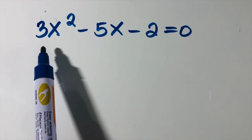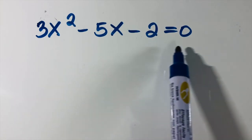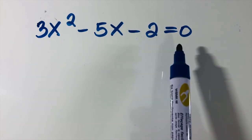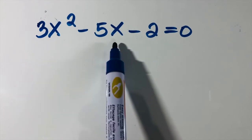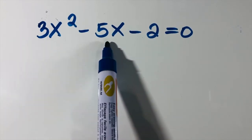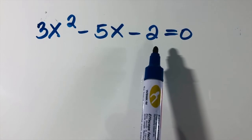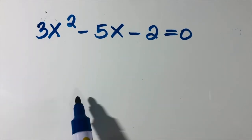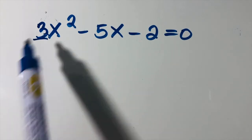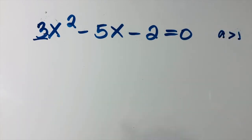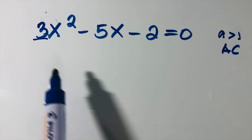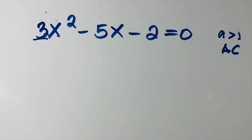Let us try 3x squared minus 5x minus 2 equals zero. Is this in standard form? Yes. Is there a common factor among all terms — 3, 5, 2? No, and x is only in the first two terms. Look at a: a is greater than one, so we cannot use the product and sum. We need to use the AC method.